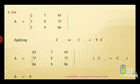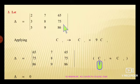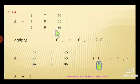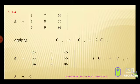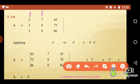Moving to the next problem. Let delta equal the determinant with first column 2, 3, 5; second column 7, 8, 9; and third column 65, 75, 86. Then show that the value of this delta is again zero. This is a bit tricky example.